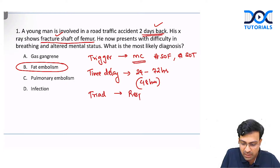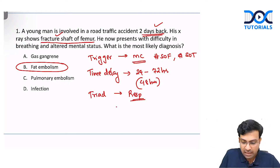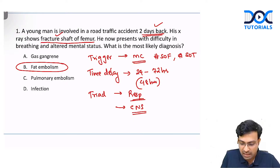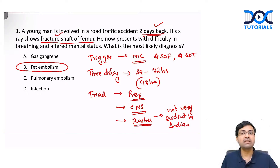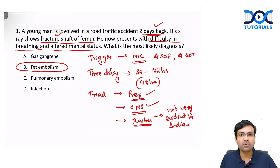These patients will have a triad of symptoms: respiratory symptoms in the form of dyspnea, tachypnea, and a fall in SpO2; CNS symptoms such as altered mental status, seizures, and aggressive behavior; and rashes, though rashes may not be very evident in patients with darker skin complexion. In this patient, difficulty in breathing and altered mental status are present — classical features of fat embolism syndrome.